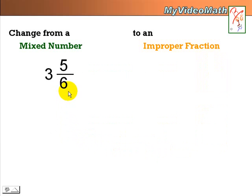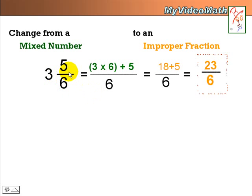Okay, you can work on your own. 3 and 5 6ths. 3 times 6 plus 5 equals 23 over 6. Did you get the right answer?